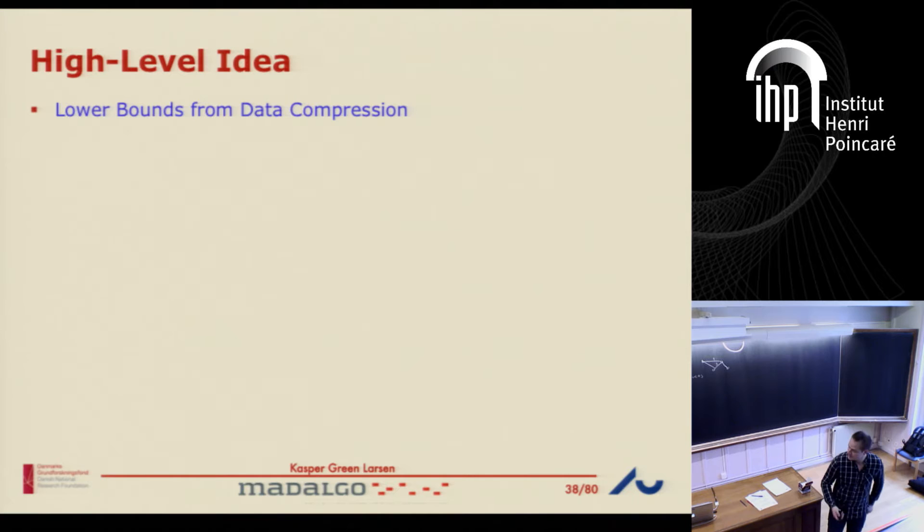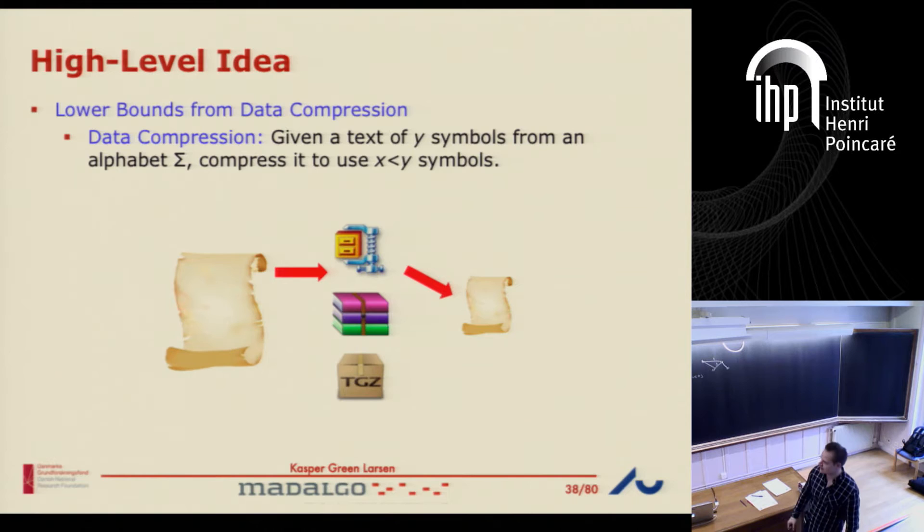So the last one is a slightly different approach. The high-level idea: you want to prove a lower bound not from communication complexity, but from some sort of compression approach.